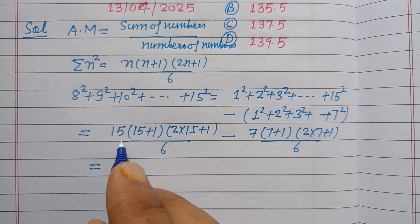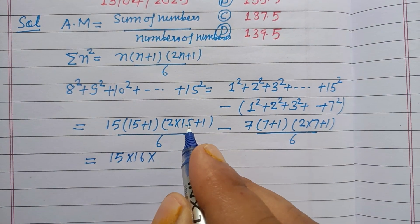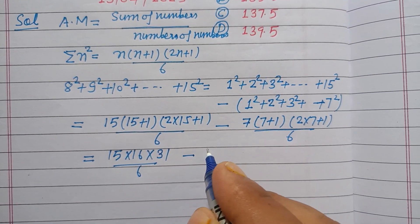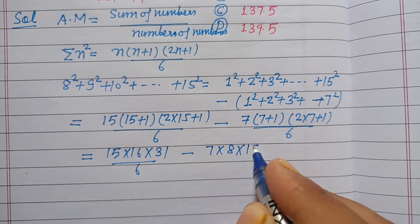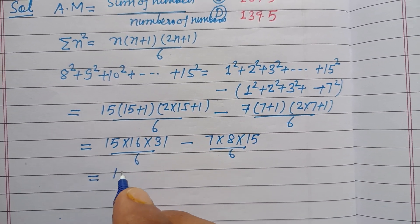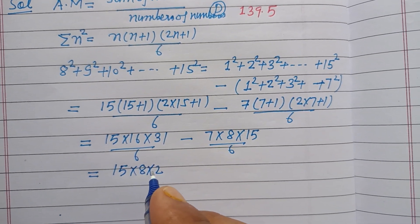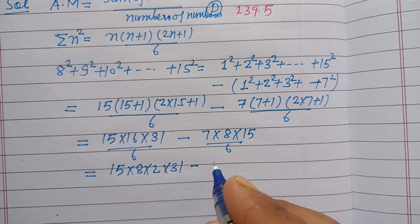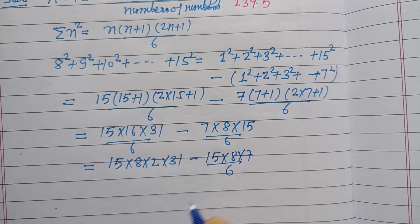So we have: 15 × 16 × 31 divided by 6, minus 7 × 8 × 15 divided by 6. We can factor this as 15 × 8 × (2 × 31 − 7) divided by 6, since 8 is common to both terms.